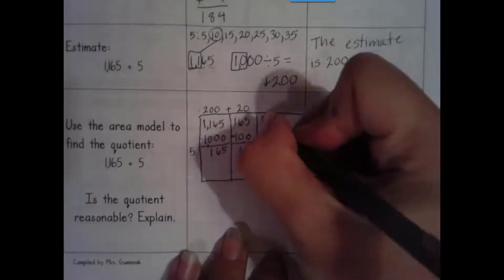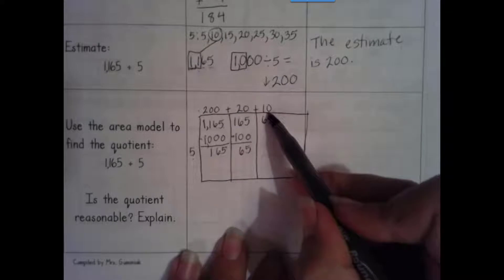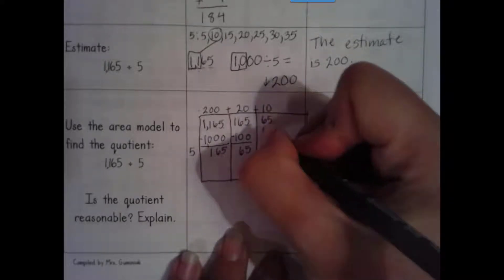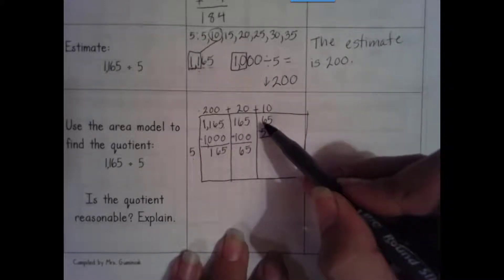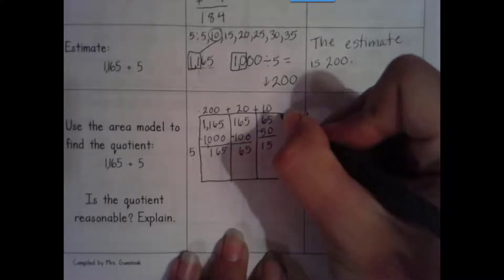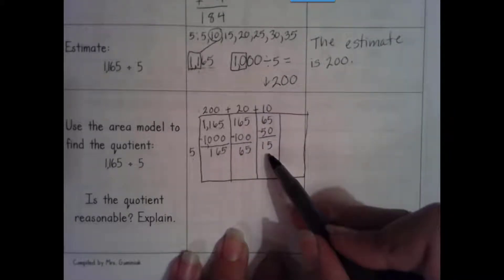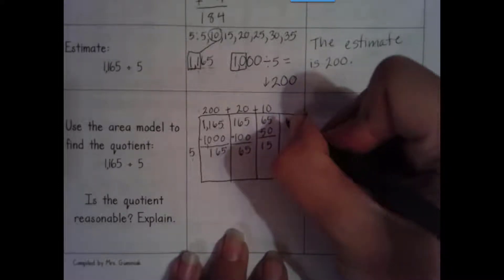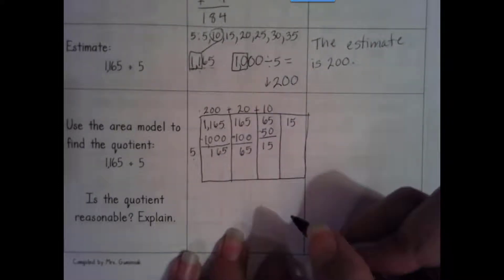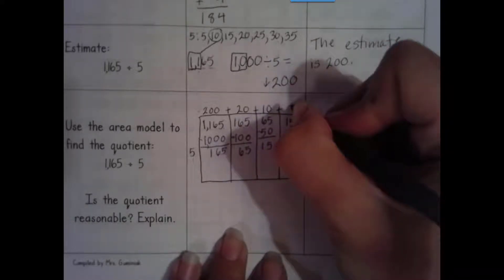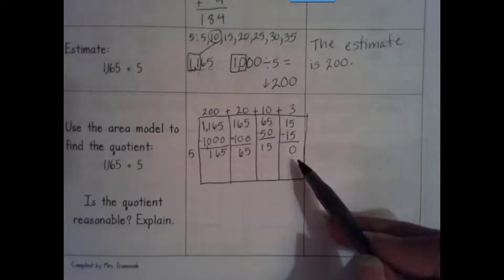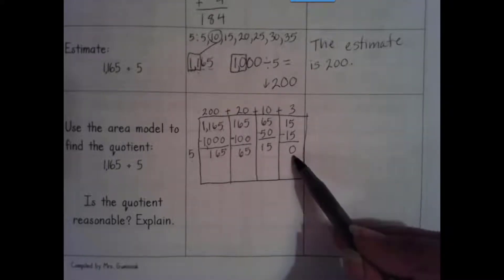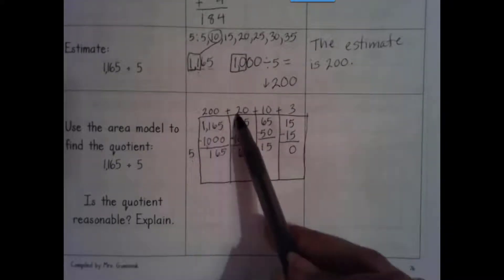I'm going to bring 65 up here. Let's try a group of 10 fives — 10 times 5 is 50. More on top, no need to stop. I can take out more groups of 5 from the remaining 15, so I know that 3 times 5 is 15. Numbers the same, zeros the game. I can't take any groups out of 0, so we are done.